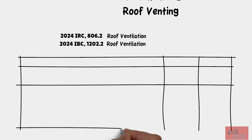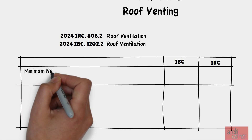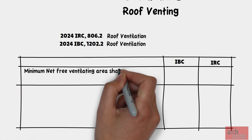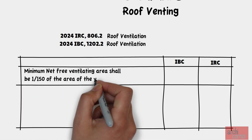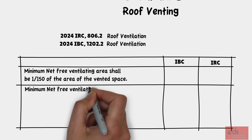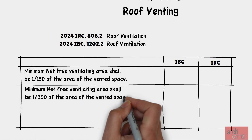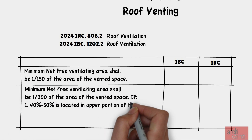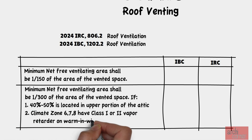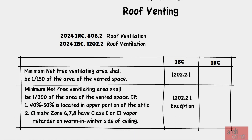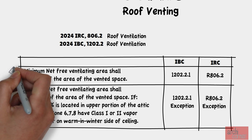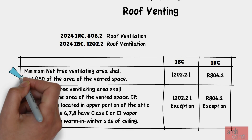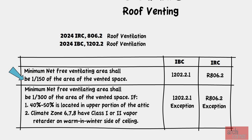As I was saying, there are basically two options. The first option is having most, if not all, of your venting on the lower portion of the roof. The second option is to only have between 40 to 50% of the venting on the upper portion. In the first option, the minimum net free venting area shall be 1/150th of the area of the vented space. Depending on whether you are referencing the IBC or IRC, here are the code sections.